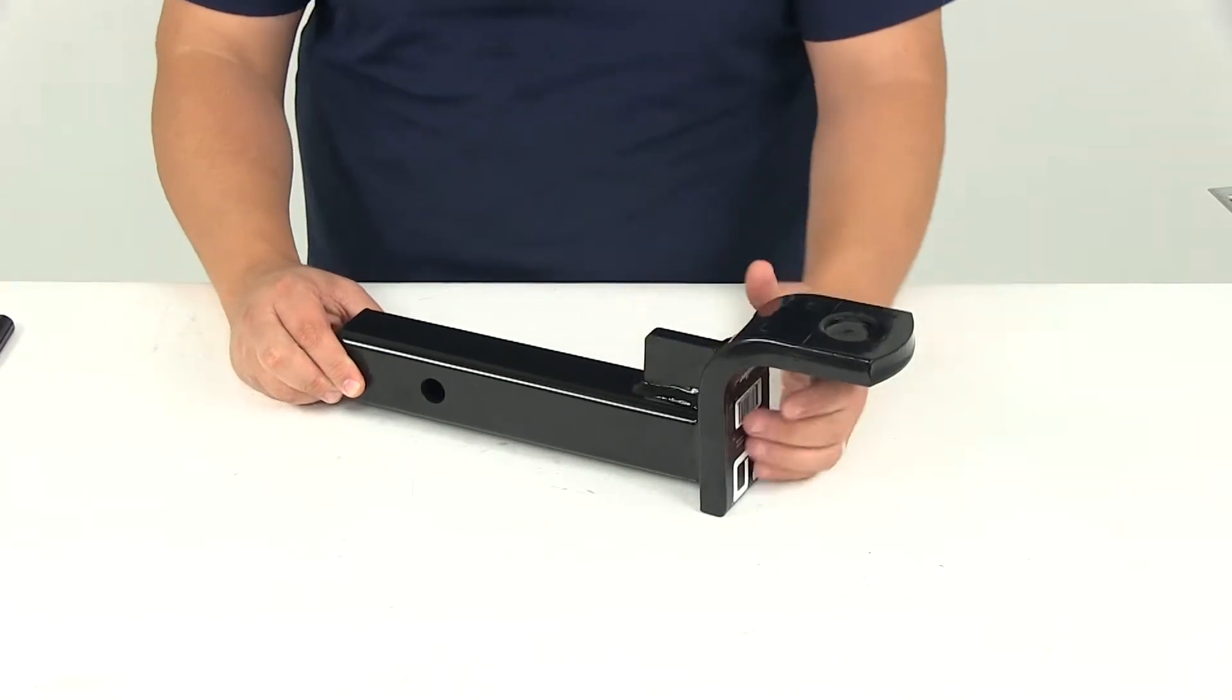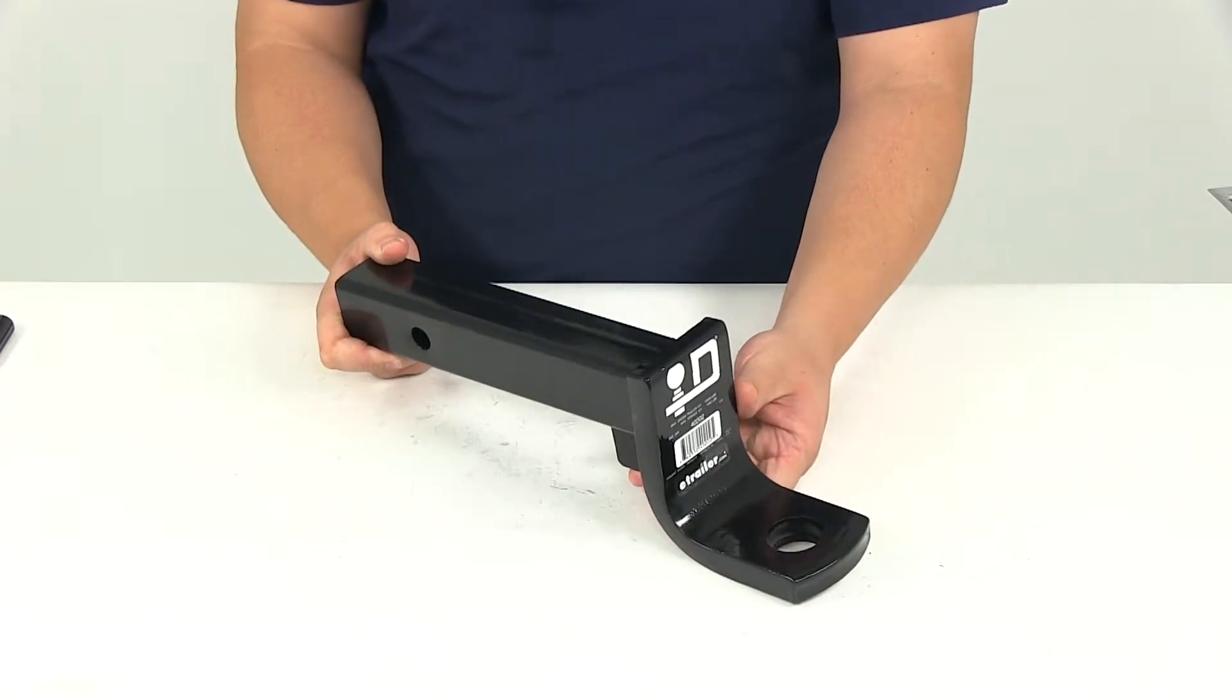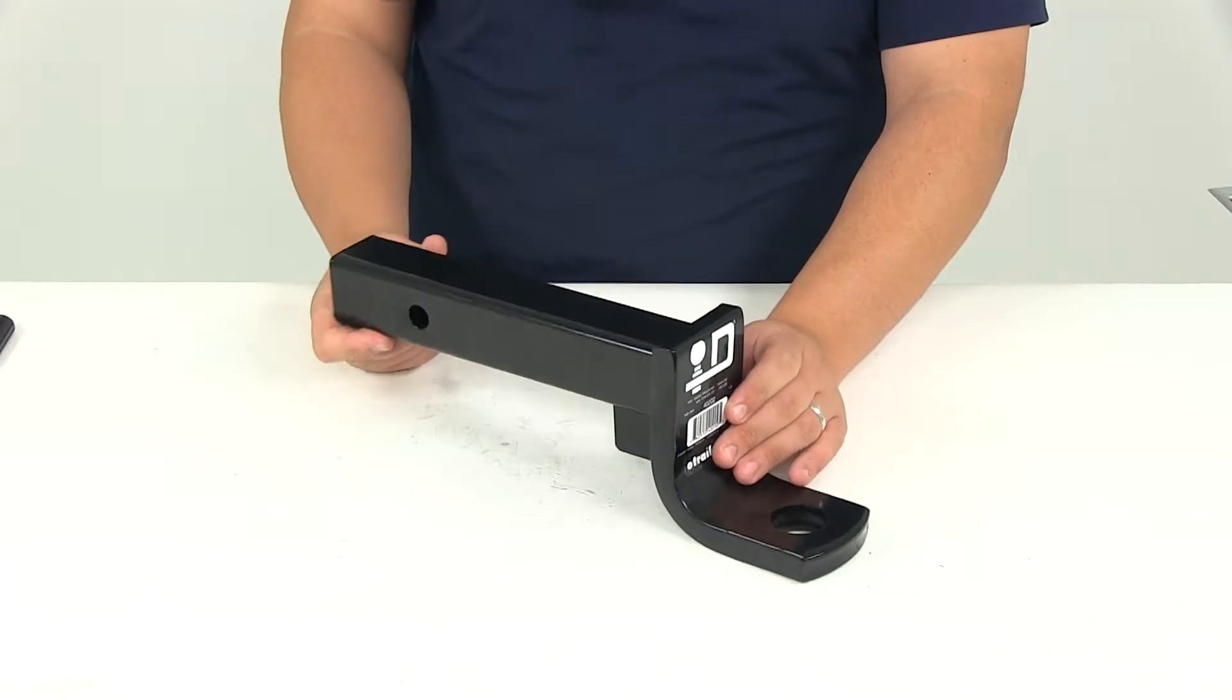This is rated for up to 10,000 pounds of gross towing weight and 1,000 pounds of maximum tongue weight. It's made from a steel construction with a black powder coated finish so it is going to stand up well against rust and corrosion.